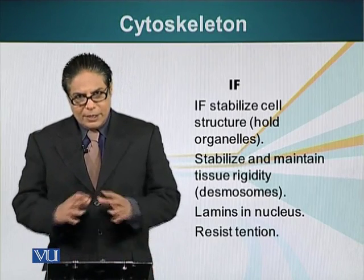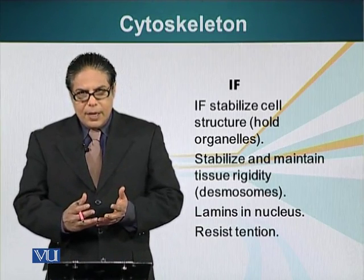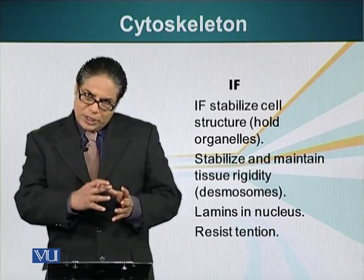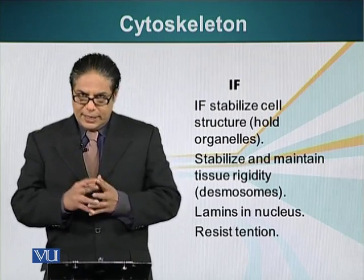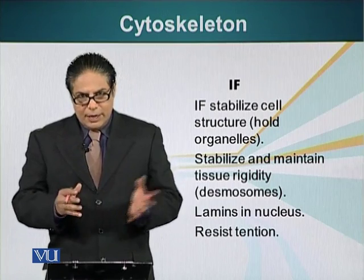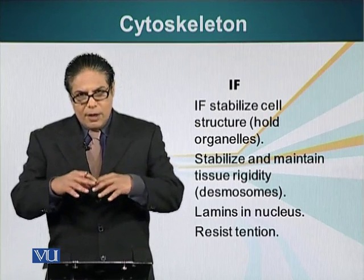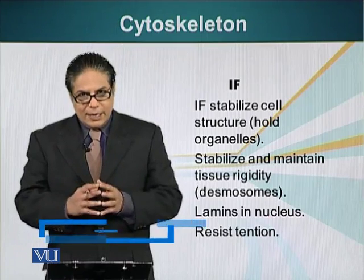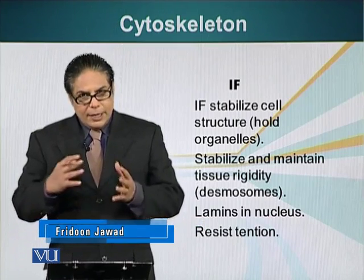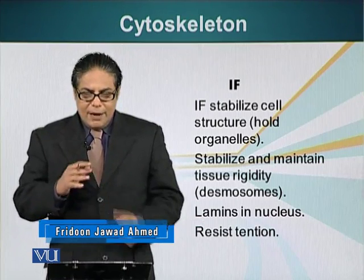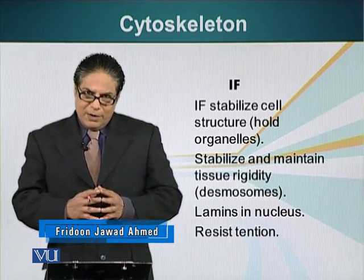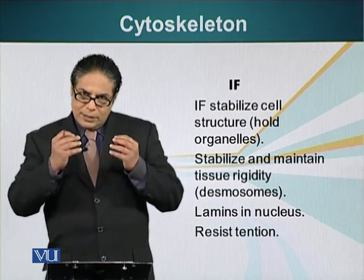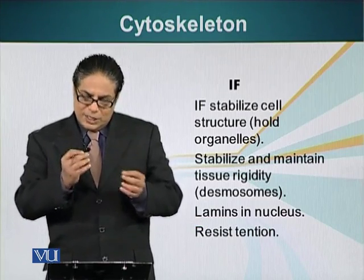Intermediate filaments stabilize cell shape. They also maintain specific locations of some of the organelles inside the cell. Laminins, which I mentioned in one of my previous modules, give the nucleus its shape and also protect the DNA, the genetic material — they are also a type of intermediate filament. In fact, there are 50 different types of intermediate filaments, and most of them perform one simple function: resist tension.